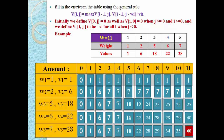Let us start from the last row, last column: row 5, column 11, which has a value of 40. We compare with the above value. The above value at row 4, column 11 is also 40. If the current value and the above value are both equal, we just move to that location without returning any object. Since both are 40, we move up to row 4.